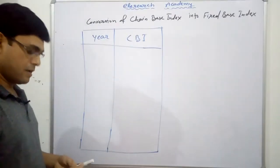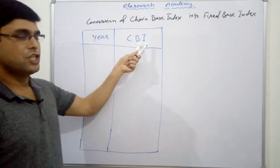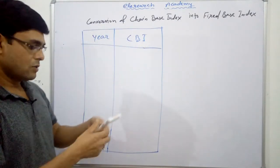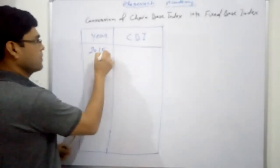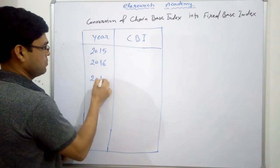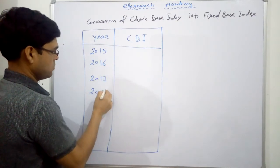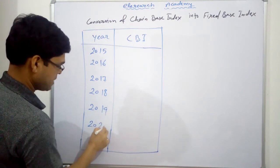Friends, here we will be given the information like this one here and chain base index. So let us assume we have here from 2015 to 2020: 2016, 2017, 2018, 2019 and 2020.